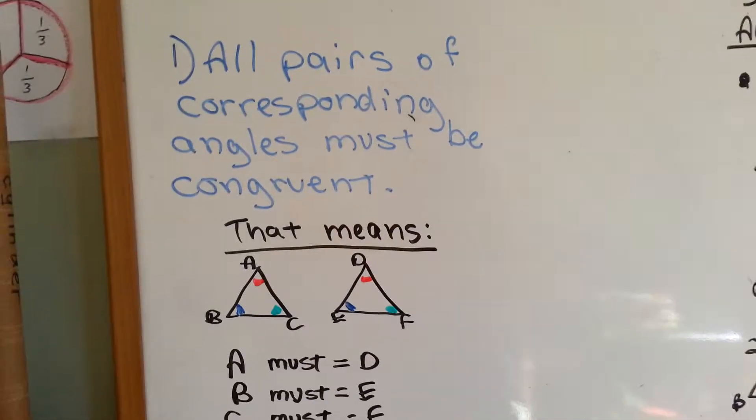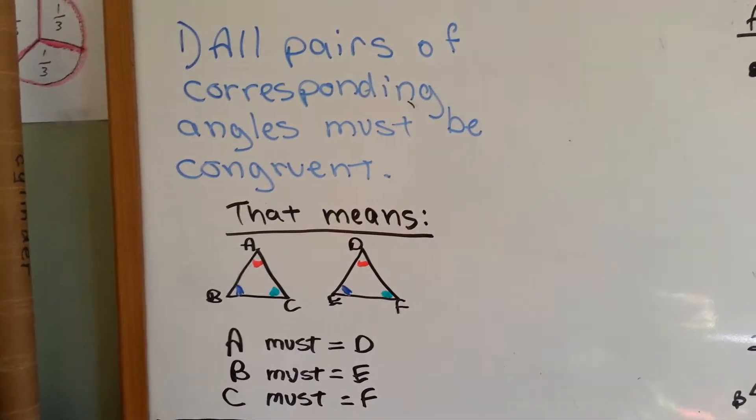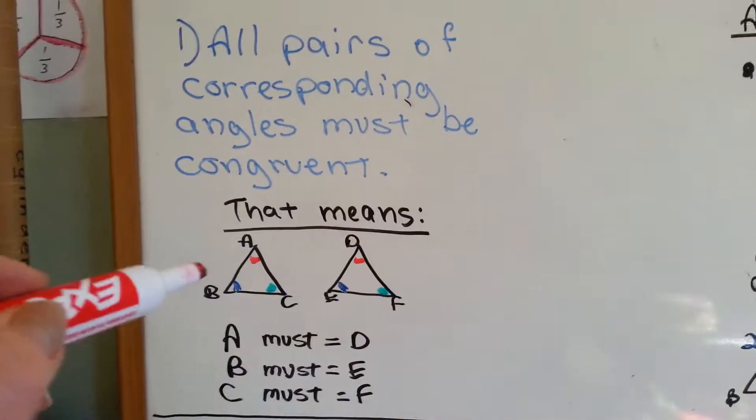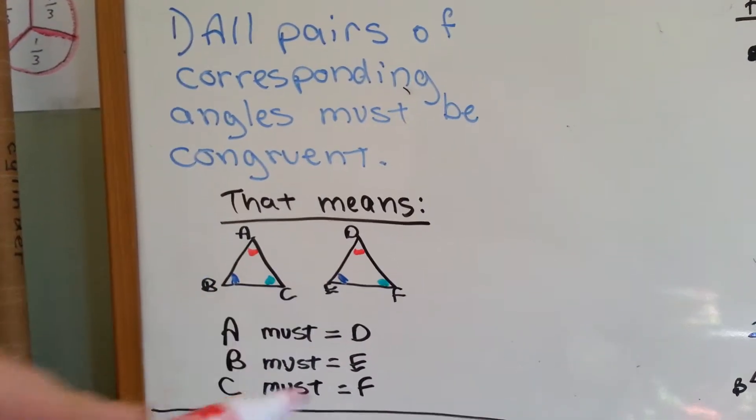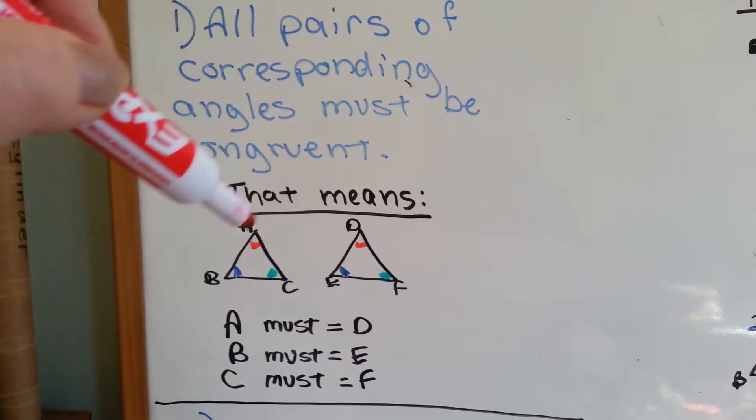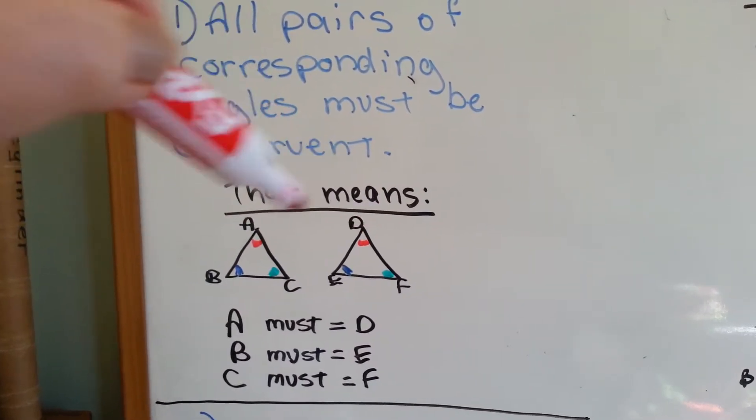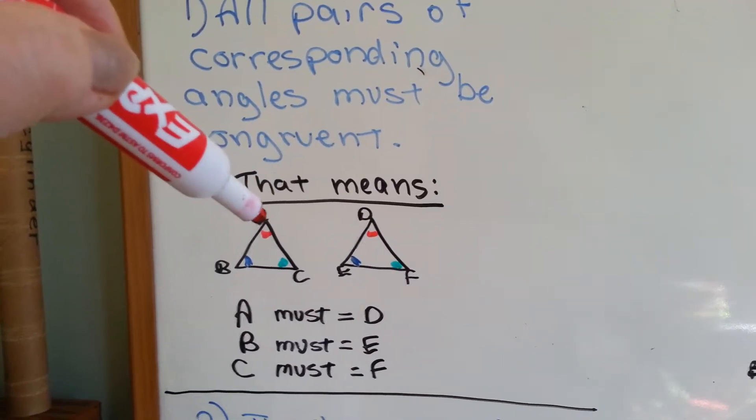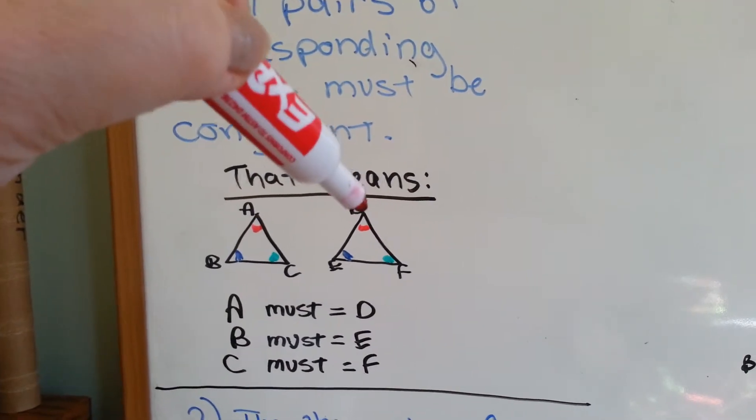All pairs of corresponding angles must be congruent. That means if you're comparing this one to this one, see these two top red ones here, A and D? Those are corresponding angles, because this one is in the same place as this one.